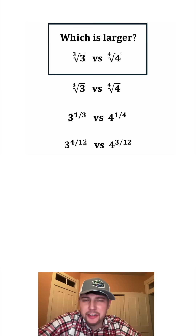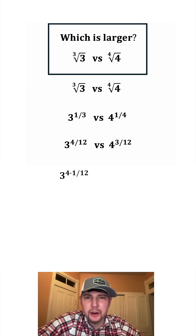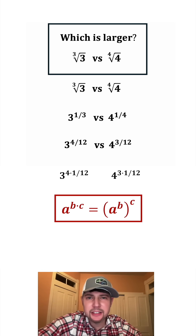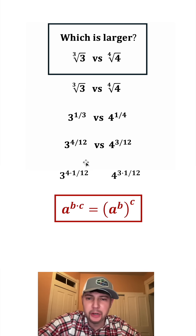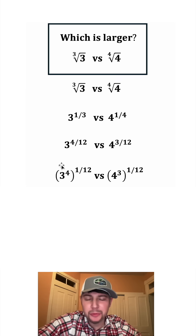Next, four twelfths — that's the same thing as four times one twelfth. So we can rewrite three to the four twelfths as three to the four times one twelfth. And on this side, we can rewrite four to the three twelfths as four to the power of three times one twelfth. Now using these notes, anytime you have a to the power of b times c, you can rewrite it as a to the b, whole thing to the c. So three to the four times one twelfth can be rewritten as three to the four, whole thing to the one twelfth. And four to the power of three times one twelfth can be rewritten as four to the three, whole thing to the one twelfth.